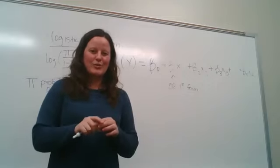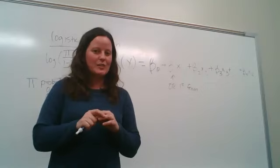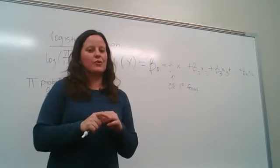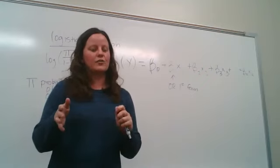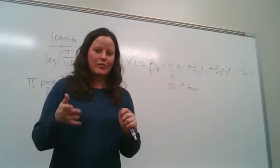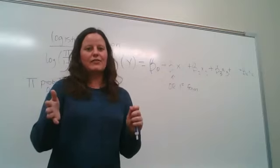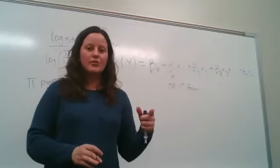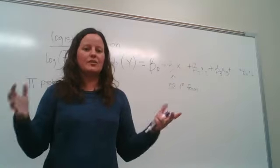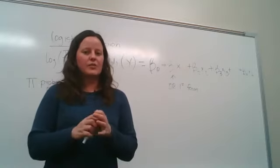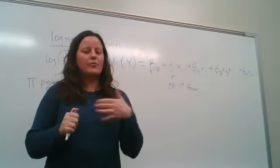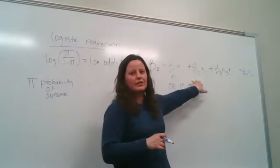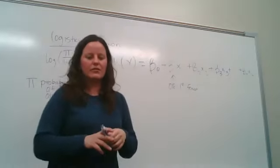I'll show you a program called DAGitty in a separate video. The name comes from directed acyclic graph — abbreviated DAG — and the website is called DAGitty. You and your group will come up with a causal diagram explaining the relationship between your exposure and outcome, and the program will actually tell you which variables you need to include in your model to adequately adjust for confounding.